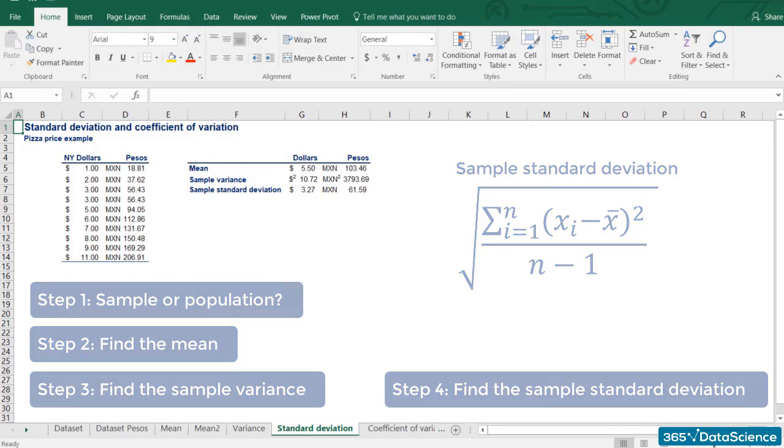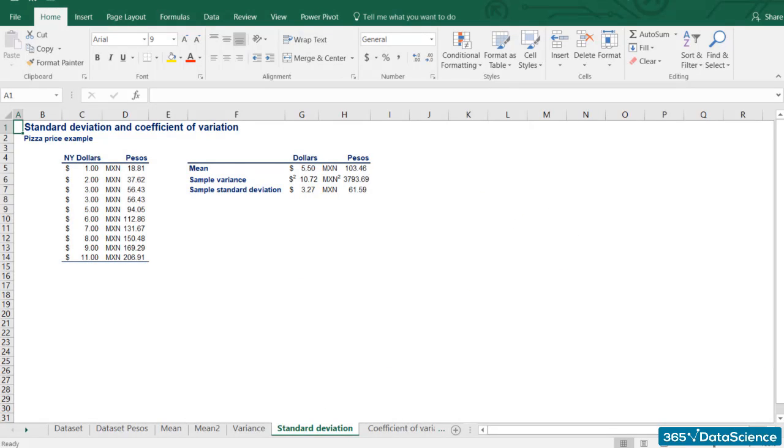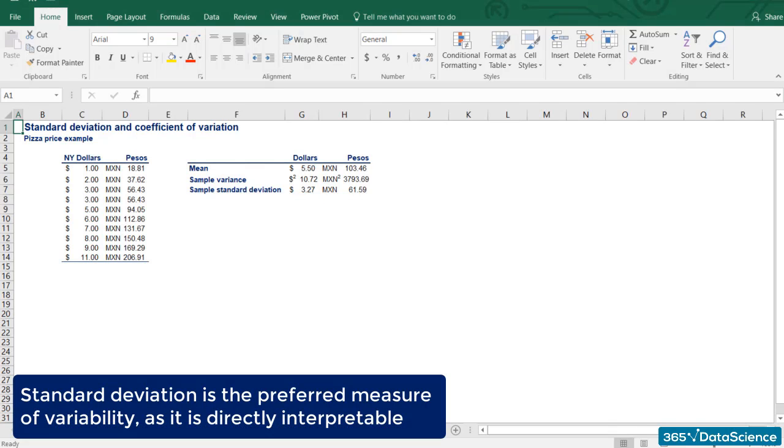Let's make a couple of observations. First, variance gives results in squared units, while standard deviation in original units. This is the main reason why professionals prefer to use standard deviation as the main measure of variability. It is directly interpretable. Squared dollars means nothing even in the field of statistics.